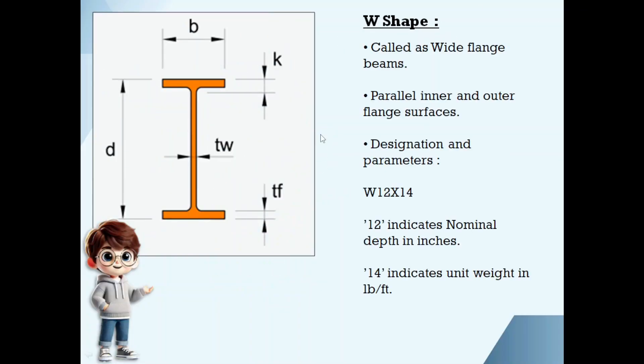We go with W shape. Usually for a structural steel shape, this is web, we call these two flanges. This is the thickness of web, this is thickness of flange, this is K region, this is width and this is the depth. W shapes are also called as wide flange beams.